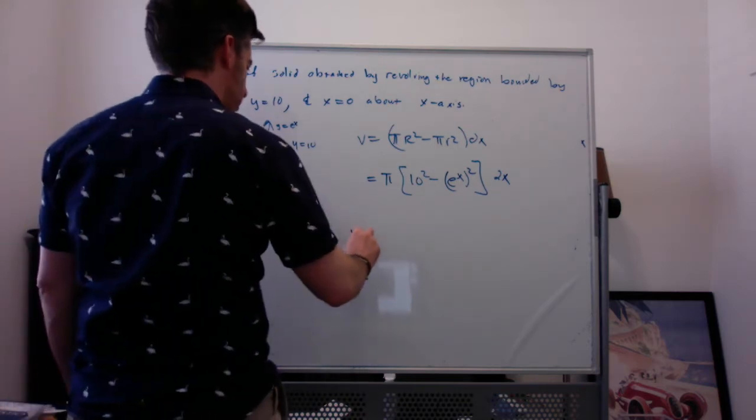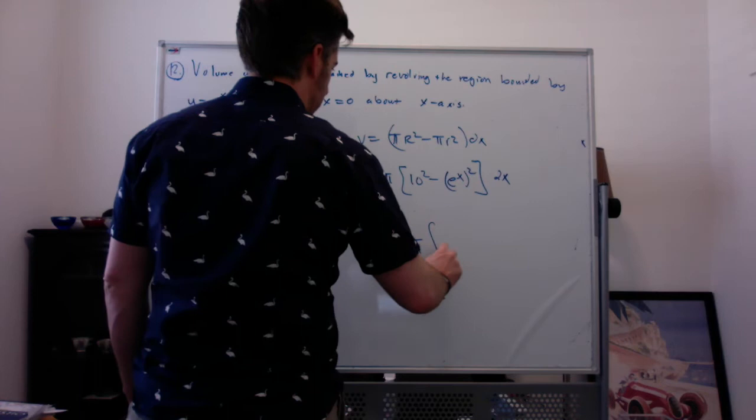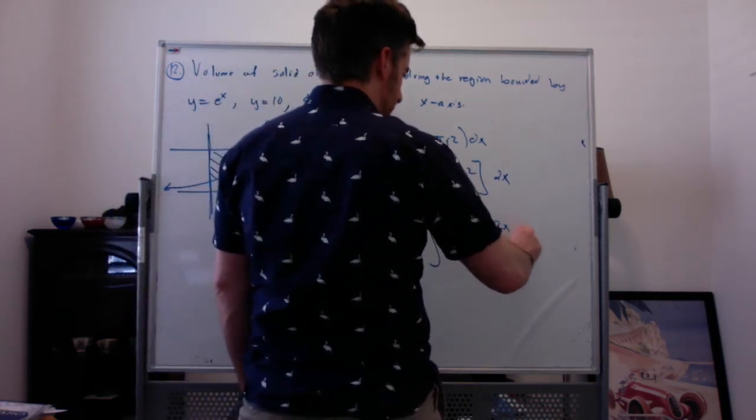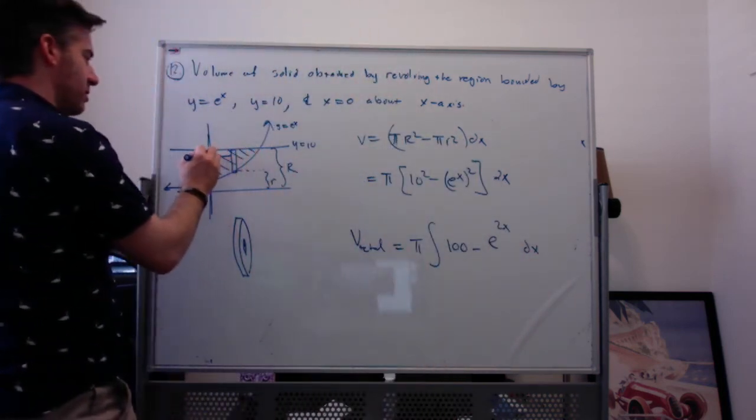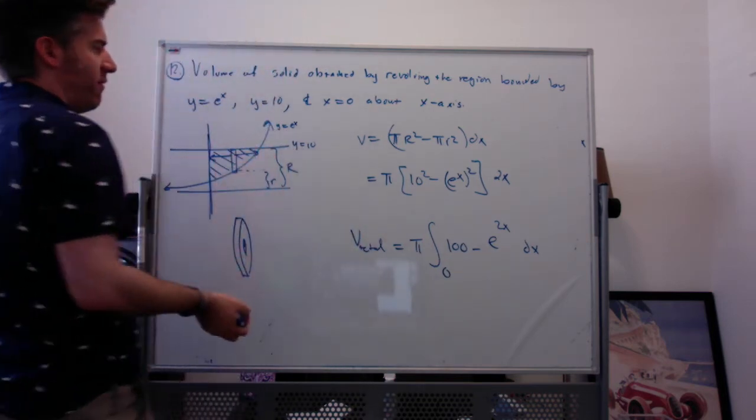So then the total volume is pi times the integral of 10 squared minus e to the x squared, which is e to the 2x, from as far left as 0 to as far right as—oh no, we haven't found that point yet.